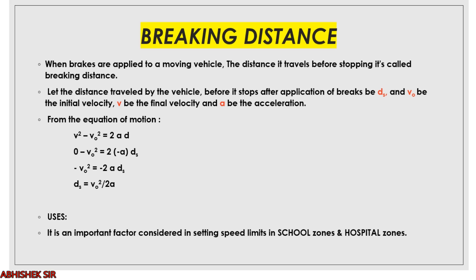Let the braking distance traveled by the vehicle before it stops be ds, and let v₀ be the initial velocity with which the object is traveling. The final velocity will always be zero because the vehicle is stopping. Let a be the acceleration. From the equations of motion, we take: v² − v₀² = 2ad.